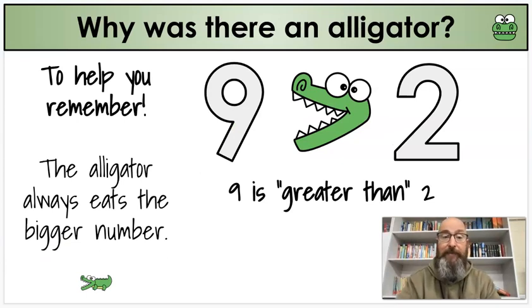Now, in the very first screen, we said this before, why was there an alligator? That didn't make any sense. Well, you know what? It's there to help you remember. The alligator always eats the bigger number. See the alligator there? He sees the nine. It's bigger. So that means we use this symbol, and nine is greater than two. That would be our sentence, because the alligator likes to eat the bigger number.